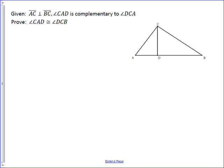Okay, in this proof, we're asked to show that angle CAD is congruent to angle DCB, and we're given this idea that CAD, one of these angles, is complementary to DCA.